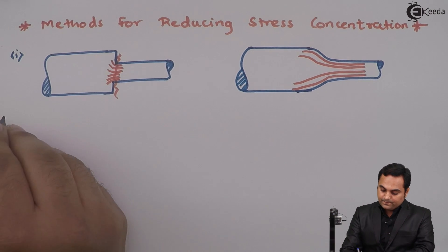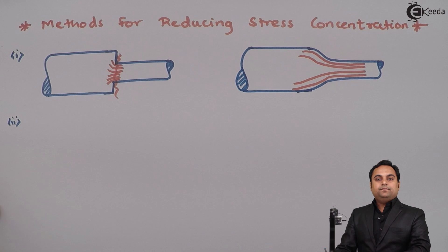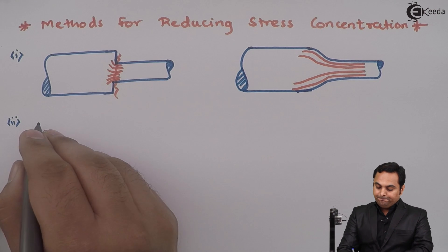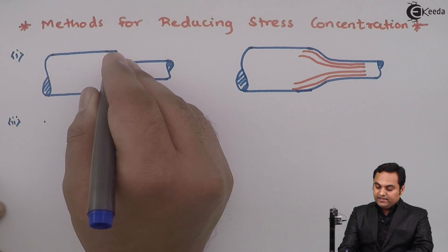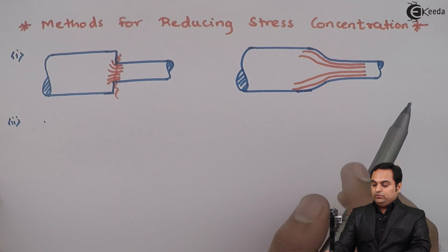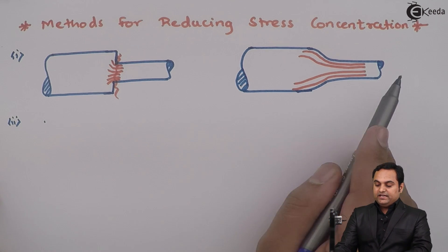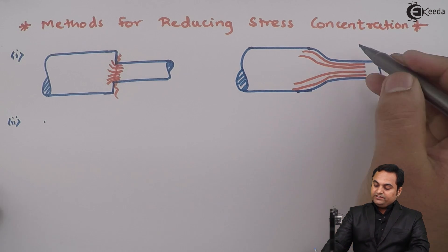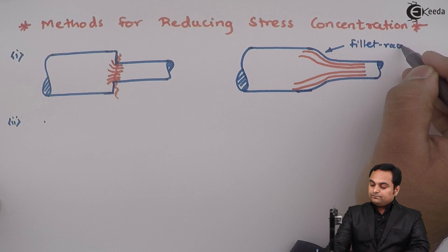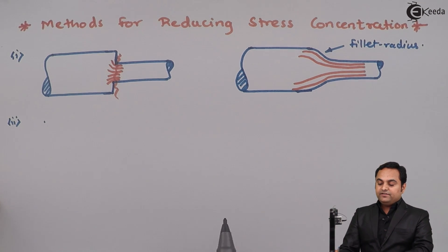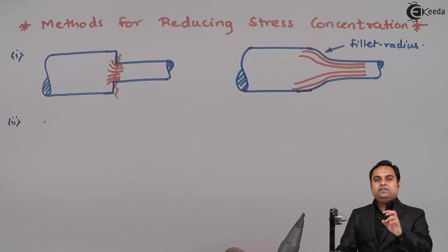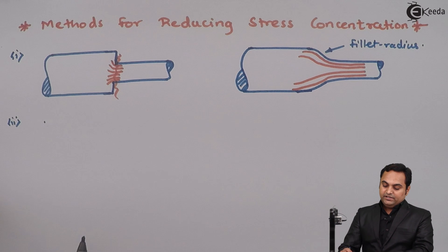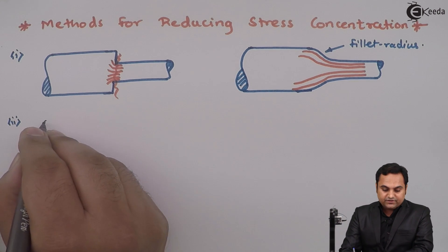In the second example, suppose we take the same case where at first we have a sudden change in area and now we have reduced it gradually. The curved transition region is called the fillet radius. If this fillet radius is very large and we have no space to make an object with such a large radius, then another method of reducing the stress concentration is needed.